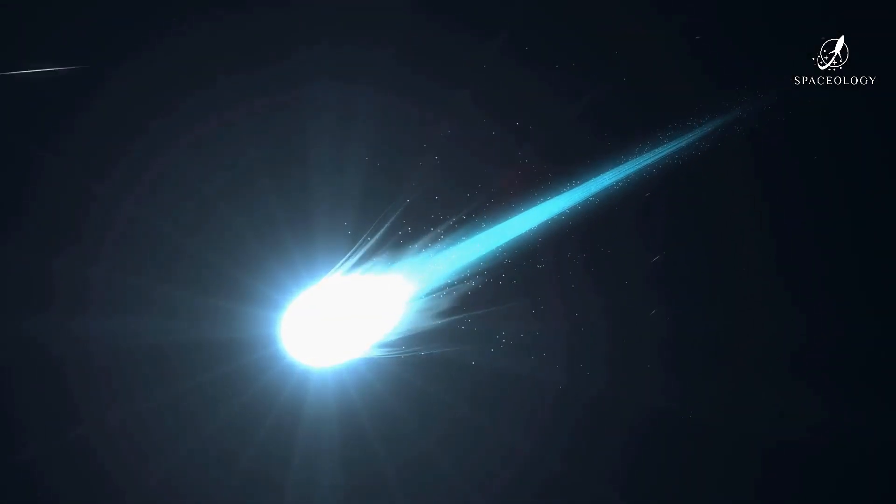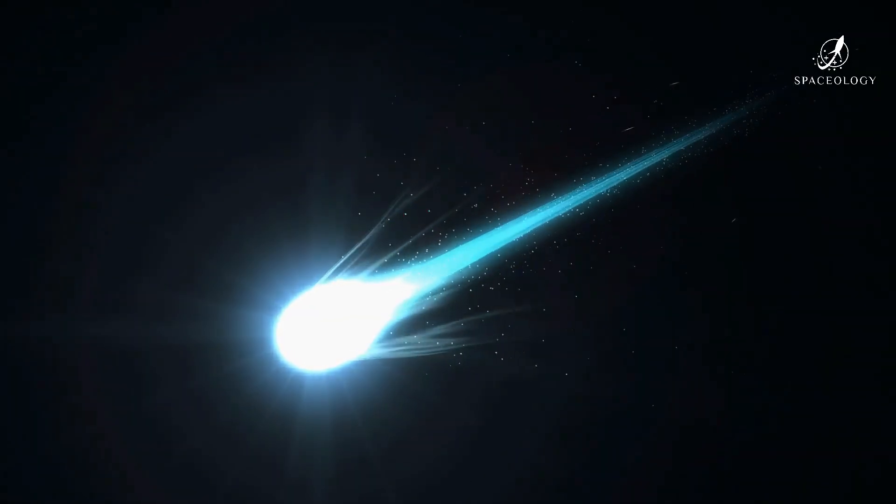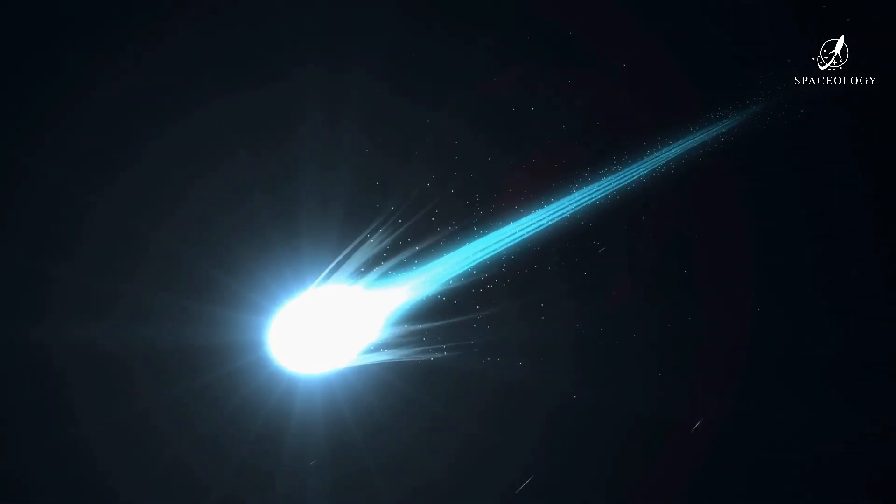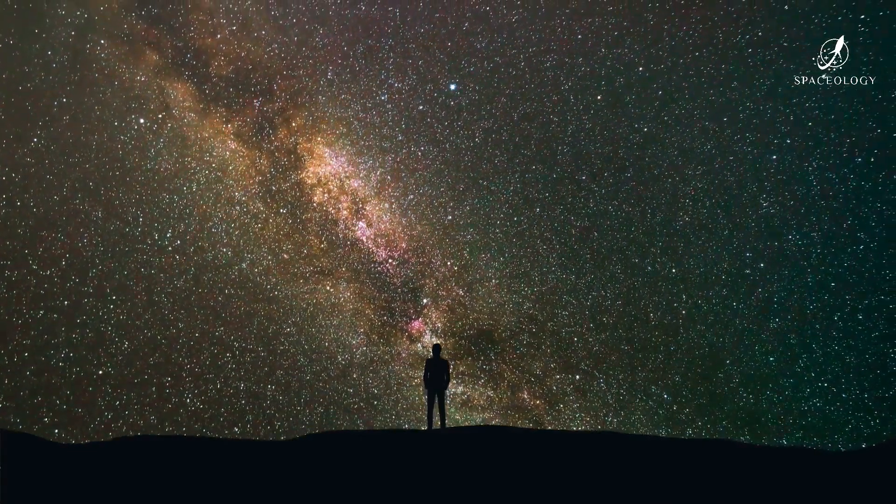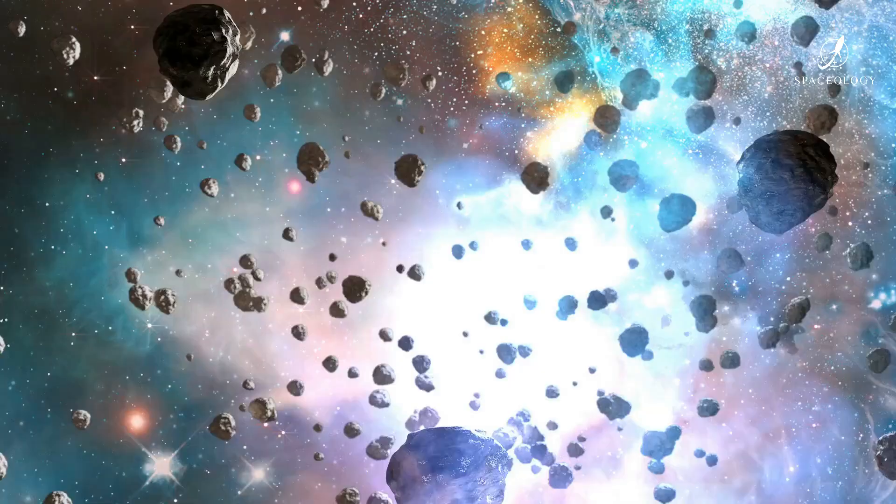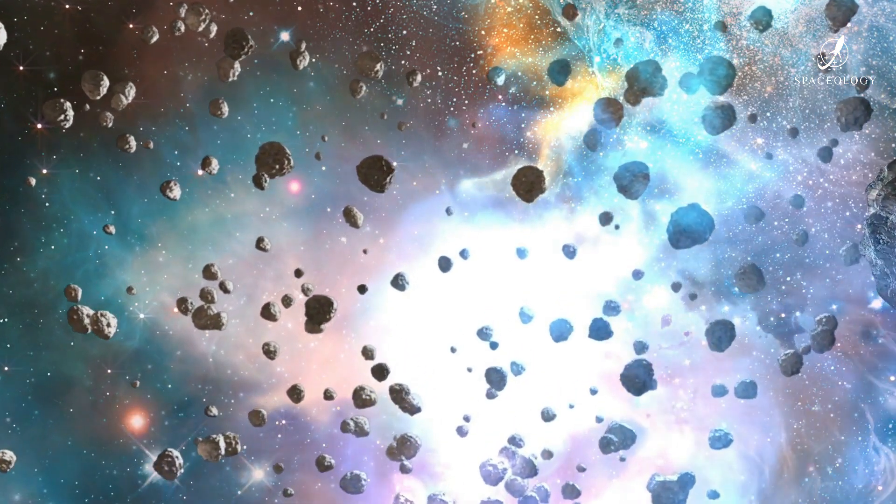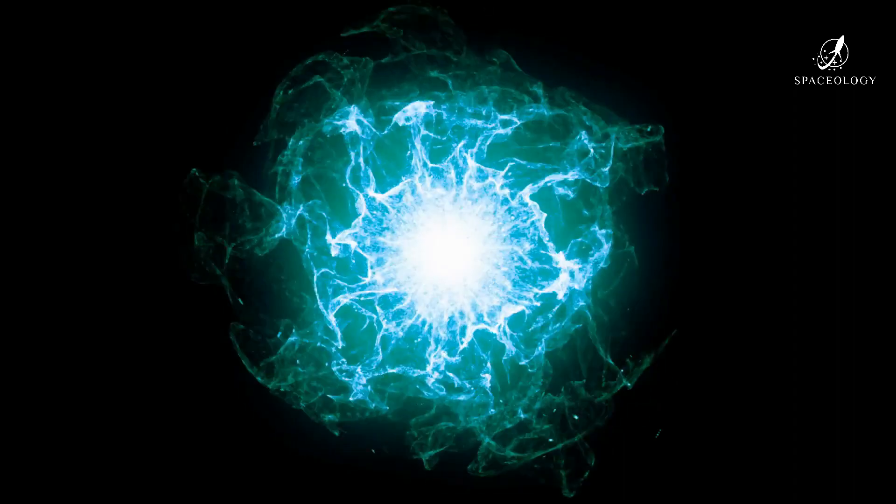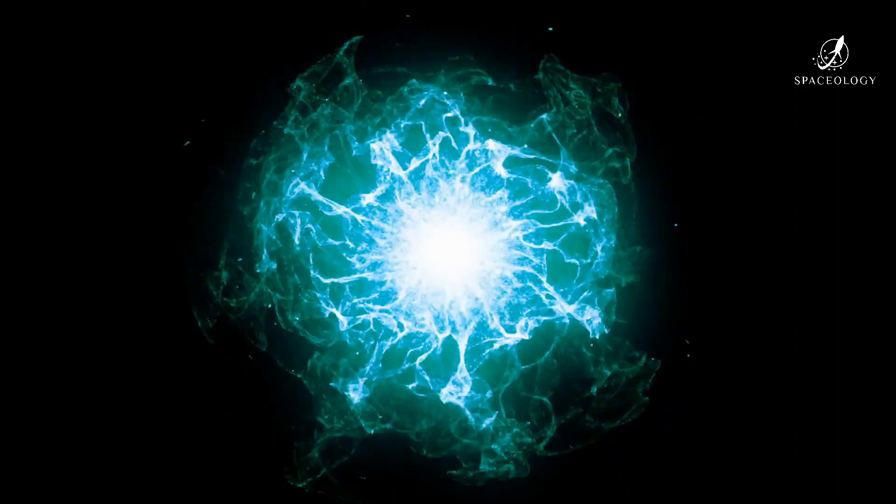Comets are described by NASA as dirty snowballs, formulated from a mix of ice, rock, gas, and dust. The dirty snowballs is used as a term to refer to their inner core nucleus found in the center of all comets.